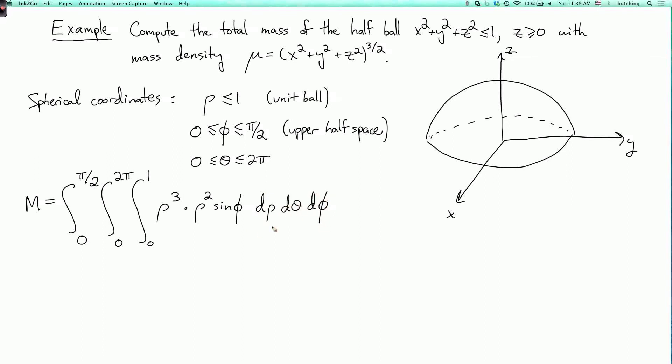We could actually do this in any of the other five orders also, because it's the spherical coordinate version of a box. Anyway, so this is the mass density, and this is the magnification factor.